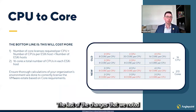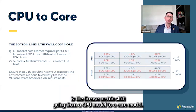So the last of the changes that we noted is the license metric shift going from a CPU model to a core model.